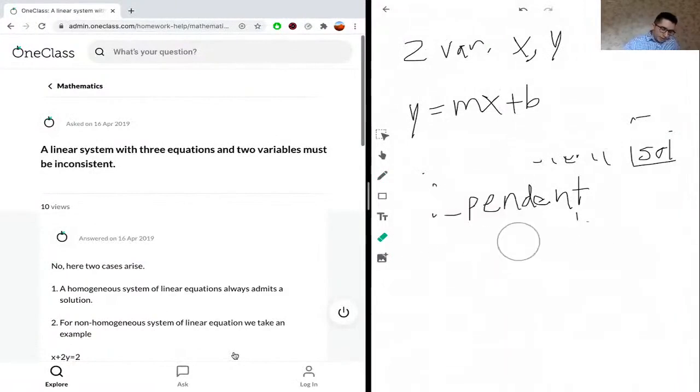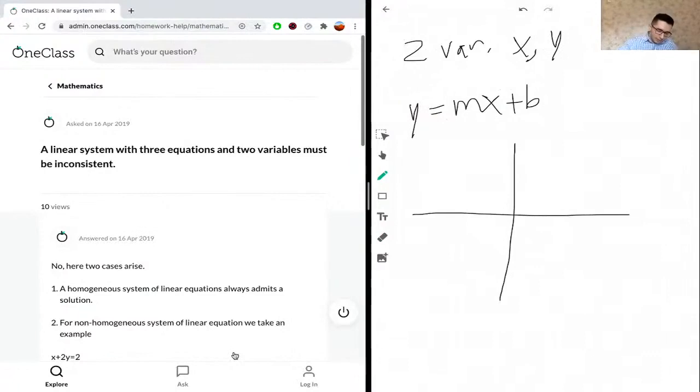We've given our definitions for what each term means, and we're trying to figure out: will this scenario always give us an inconsistent solution? We can draw a plane and think about potential possibilities for a system where this may not be true.